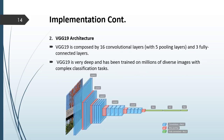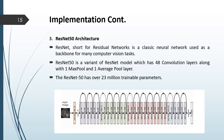The second architecture is VGG-19, which is composed of 16 convolutional layers and 3 fully connected layers. VGG-19 is very deep and has been trained on millions of diverse images for complex classification tasks. The third architecture, ResNet-50, short for residual network, is a classic neural network used as the backbone for many computer vision tasks. ResNet-50 is a variant of the ResNet model with 48 convolutional layers along with one max pooling and one average pooling layer, and has over 23 million trainable parameters.